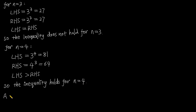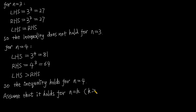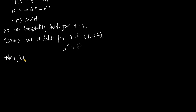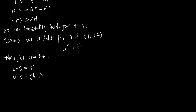Now assume that n equals k, where k is larger than or equal to 4. Then we have 3 to the power of k is larger than k to the power of 3. For n equals k plus 1, left hand side equals 3 to the power of k plus 1, and right hand side equals k plus 1 to the power of 3.